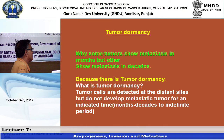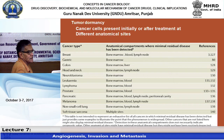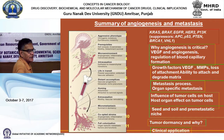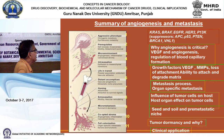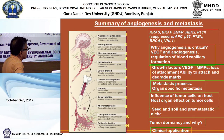Tumor dormancy means tumor cells are detected at distant sites but do not develop into metastatic tumors for an indicated time. The summary of today's lecture: why angiogenesis is critical, VEGF involvement, growth factors and VEGF with MMPs helping loosen attachment and degrade matrix, metastasis process, organ-specific metastasis, host organ effects, seed and soil theory, and tumor dormancy.